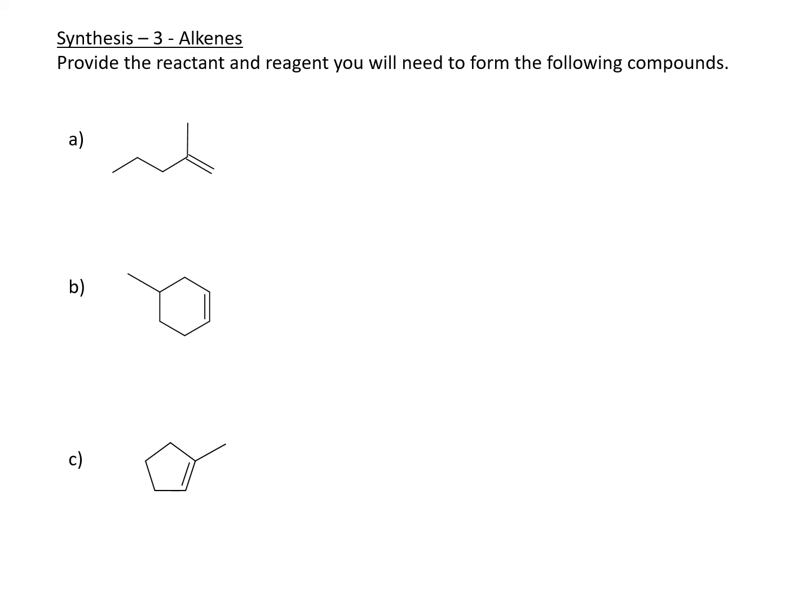Synthesis of alkenes. Provide the reactant and reagent you will need to form the following compounds. In this case, I'm looking at all the compounds and of course they're all alkenes and these are the products that are given to us. Which means we need to figure out the reactant and the reagent.